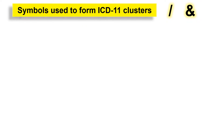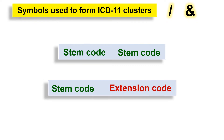ICD-11 uses two symbols to form clusters: the slash and the ampersand. The slash connects two STEM codes in a cluster, and the ampersand is placed between a STEM code and the following extension code. ICD-11 will do that automatically — you don't have to worry about selecting a symbol. ICD-11 will do it on its own.